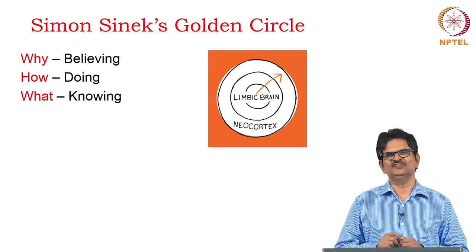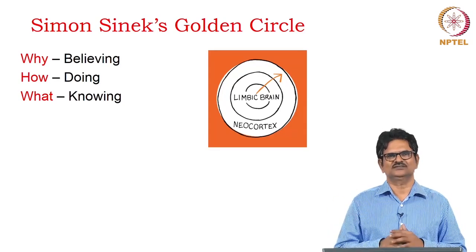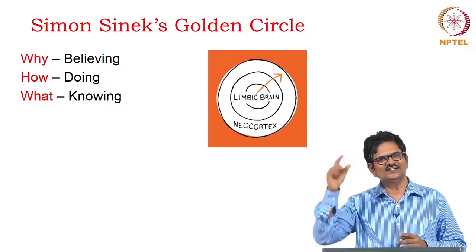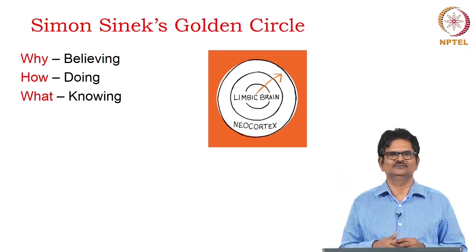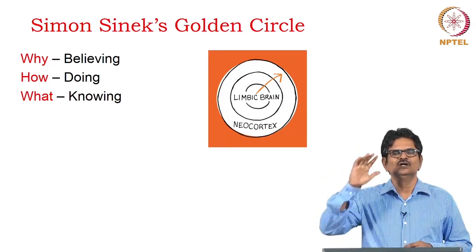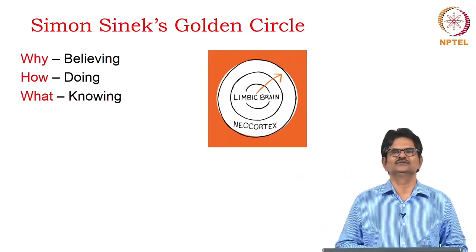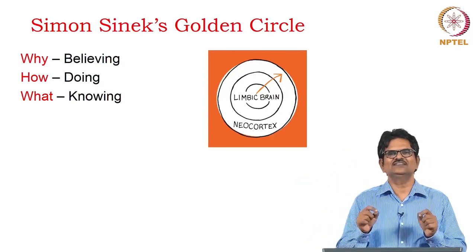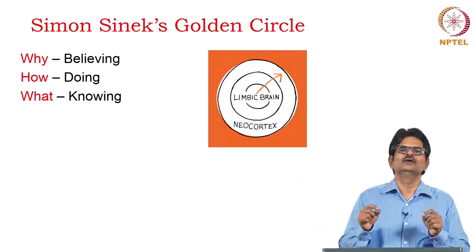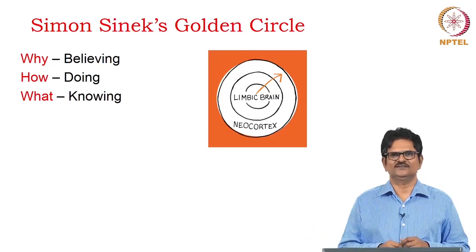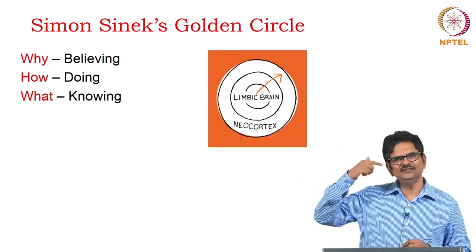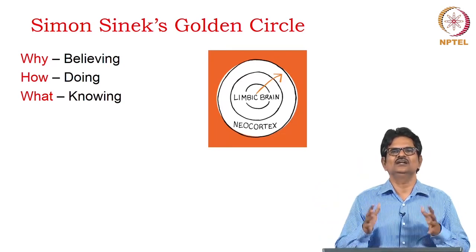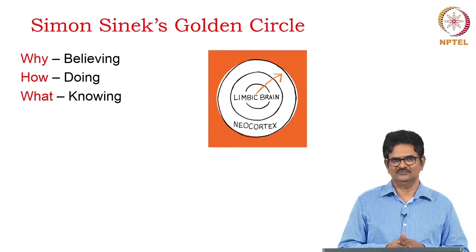He has a concept called the Golden Circle, and this Golden Circle is connected with our brain — the inner part and the outer part. The outer part has the neocortex, and within the brain, the inside part, we have the limbic brain.